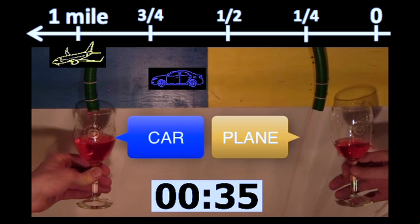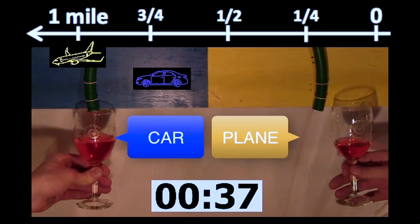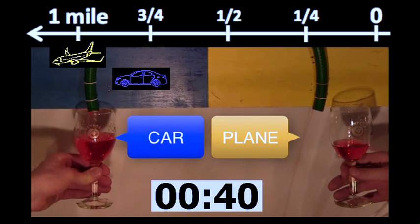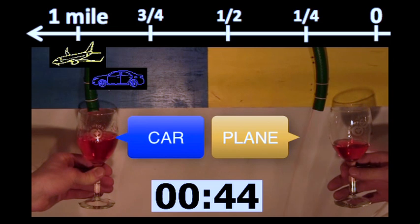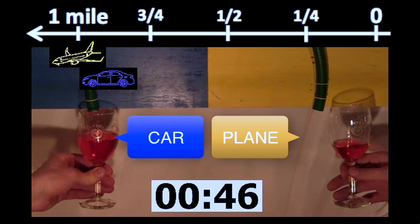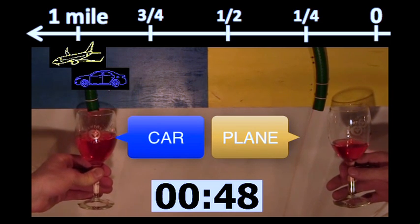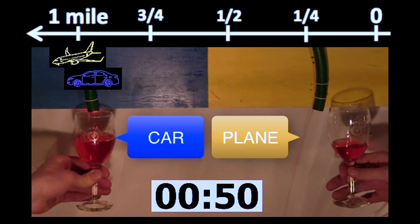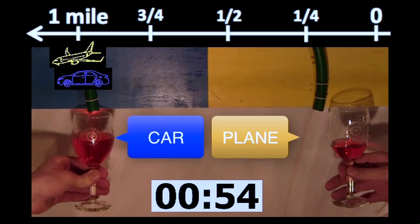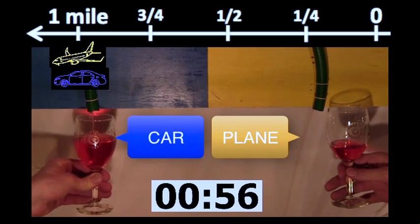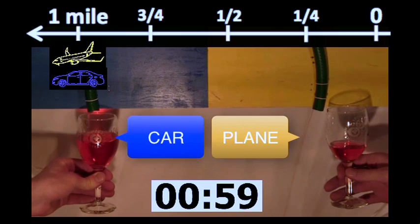What we've seen with this experiment is that comparisons of fuel consumption between different means of transportation are not necessarily as simple as they may appear. In fact, a Boeing 737 burns an enormous quantity of fuel compared to a Corolla. But because it carries a lot more passengers and also moves much faster, it actually requires less fuel to carry one passenger over 1 mile.